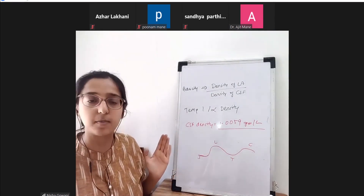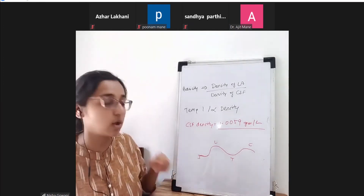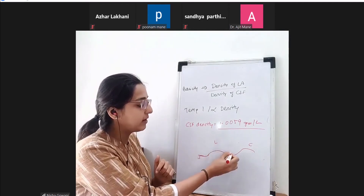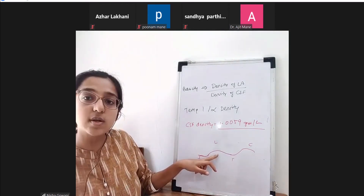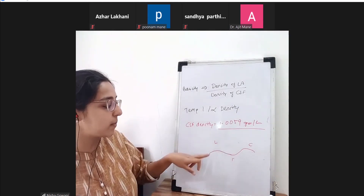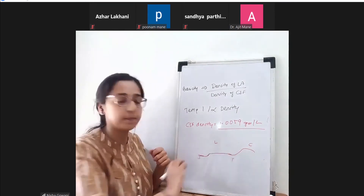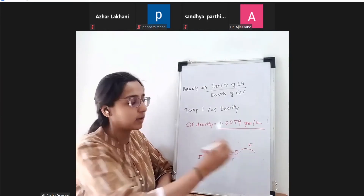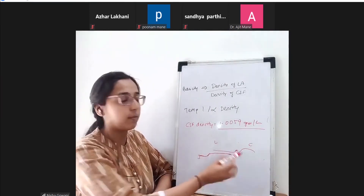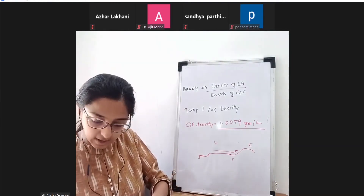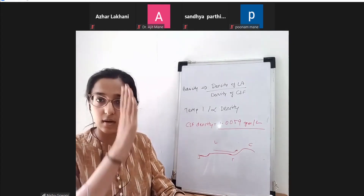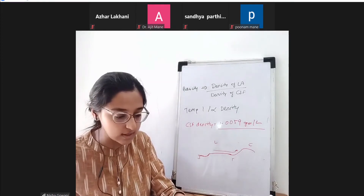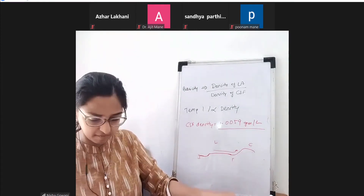If the patient is placed in lithotomy position, the lumbar lordosis flattens — the lumbar curve becomes very flat. This flattening of the lumbar lordosis means no bimodal spread; there is a more uniform spread upwards in the lithotomy position. If you give a hyperbaric drug and keep the patient sitting, the heavy drug will settle down and block the lower lumbar and sacral segments — this is known as a saddle block.